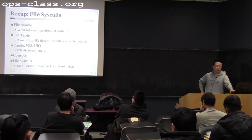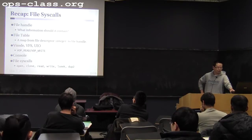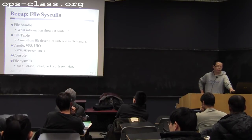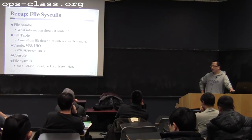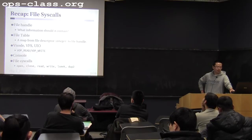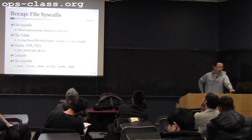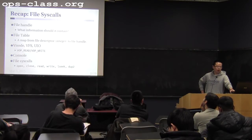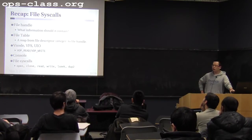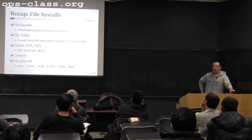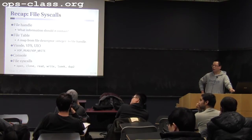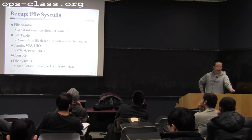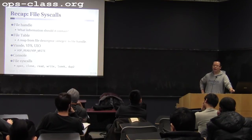Then we talked about what's already there for you to do the file syscalls — the VNode and VFS. Both VNode and VFS have some helper functions or macros to help you do the actual file read, file write, open the file, or initialize a VNode. We then talked about UIO, which you'll be using in sysread and syswrite to actually perform the read or write operation. And we talked about the console — the special file with three special file descriptors: stdin, stdout, and stderr — and how and when to initialize them. Finally, we went over each of the five syscalls.